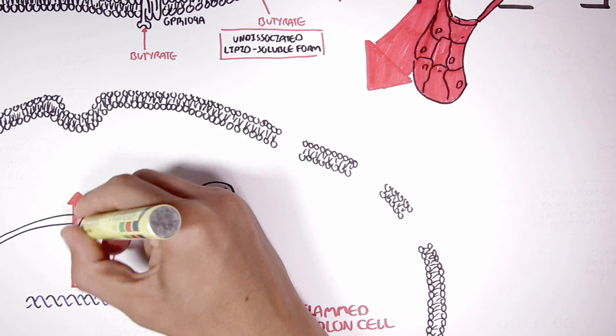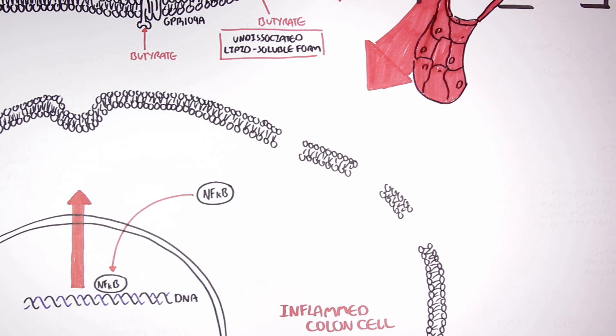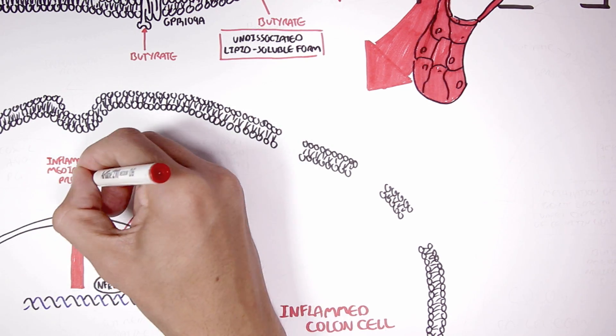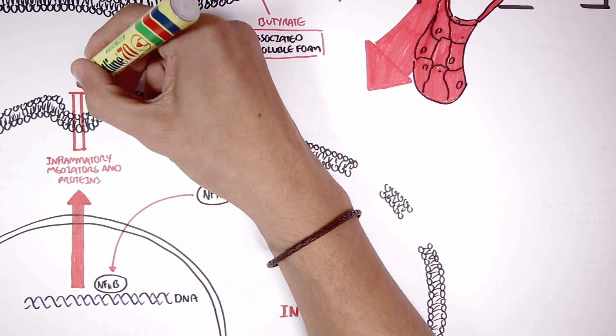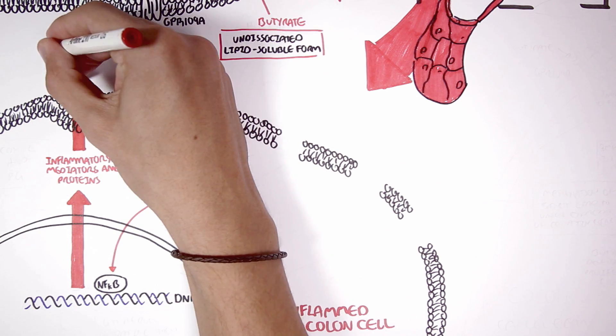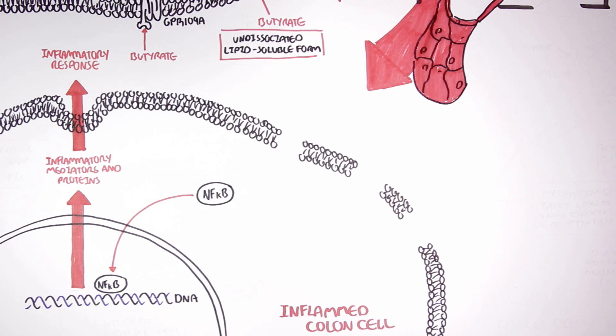Nuclear factor kappa B will stimulate the transcription of RNA that will produce inflammatory mediators and proteins, cytokines, that will then be released by the inflamed cell. These inflammatory proteins will promote the inflammatory response.